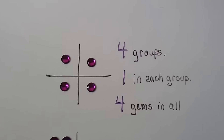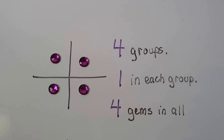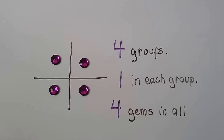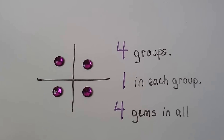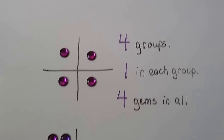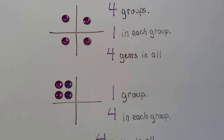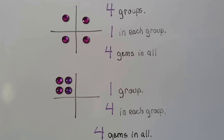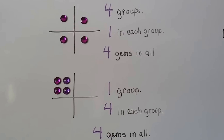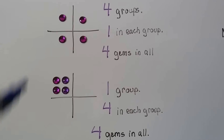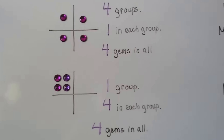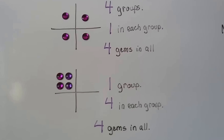Whether we have two groups with three in each, or three groups with two in each, we still have six. Now here we have four groups with one gem in each group, so there are four gems in all. Then we have one group with four in it — still four gems in all. Whether we have four groups of one or one group of four, we're still going to have four.